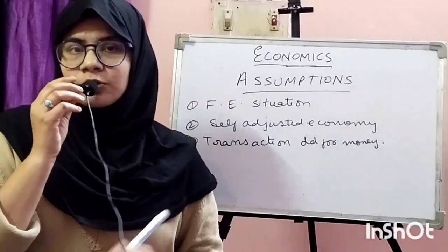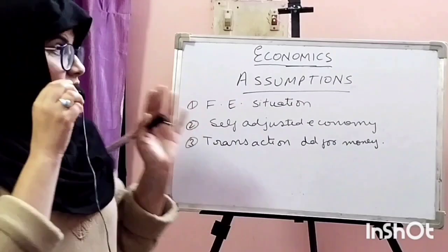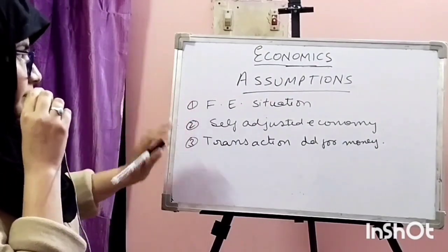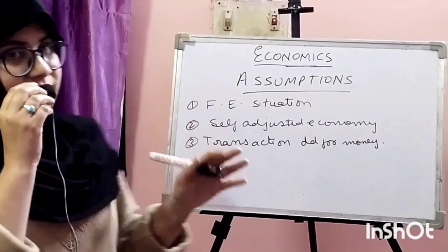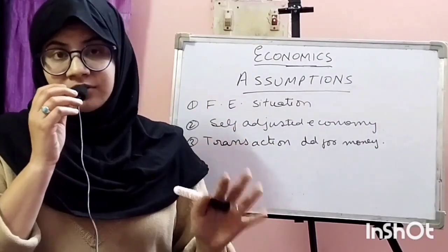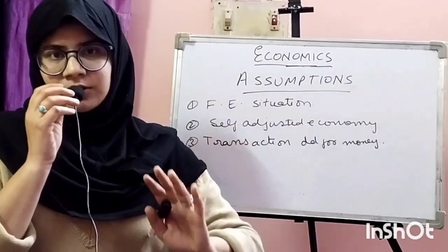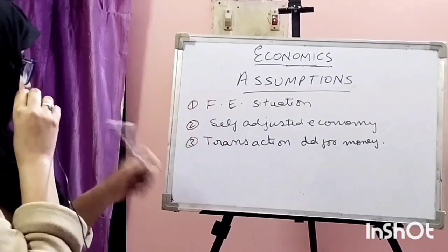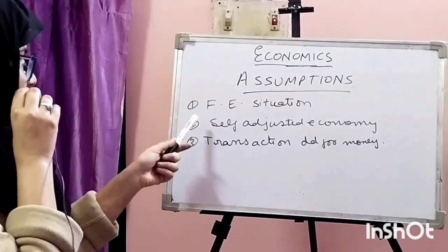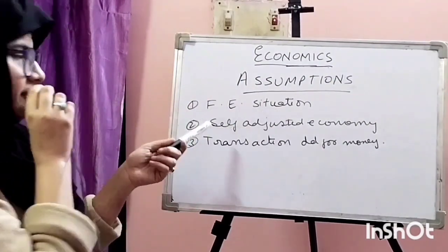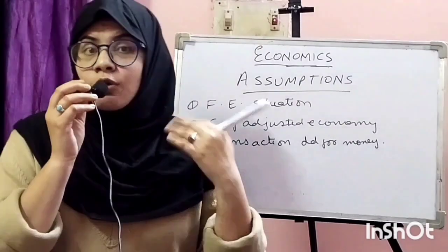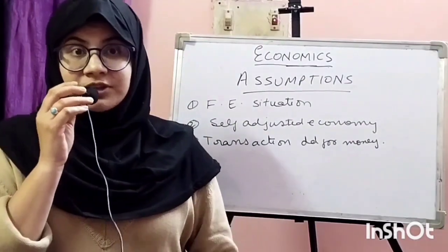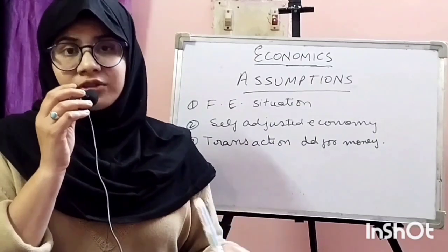Before beginning our theories, let's first see some of the assumptions of the classical theory. If you understand these assumptions, you will understand half of the classical theory, because the classical theory is based on these assumptions. The first one is the Full Employment situation — FE stands for Full Employment.